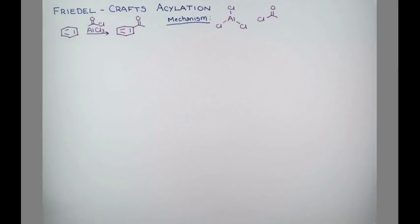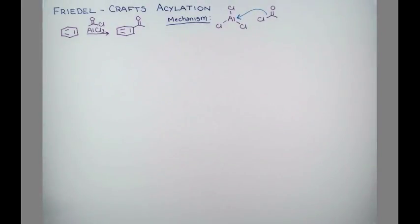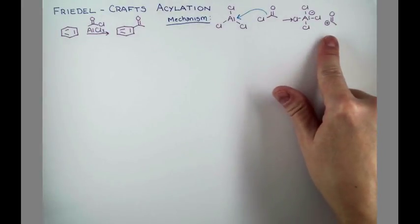You may want to check out my video on that if you haven't already. So the chlorine is going to go with its lone pairs onto aluminum. This gives us a negatively charged aluminum complex and a positively charged acylium ion.